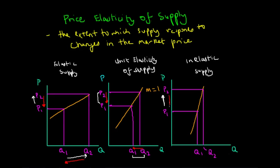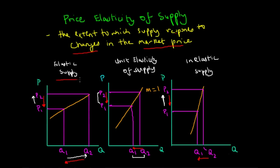The converse also holds true. So if the price decreases from P2 to P1, there are fewer profit opportunities, and producers aiming to maximise profit would decrease their supply. However, since there is an inelastic supply curve, producers could only decrease their supply from Q1 to Q2, which is proportionately less than the change in price — and that characterizes an inelastic supply curve. In conclusion, price elasticity of supply shows the extent to which supply responds to changes in the market price, with three concepts: elastic, unit elastic, and inelastic supply curves.